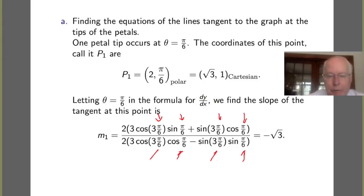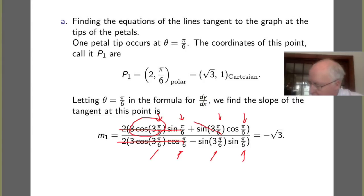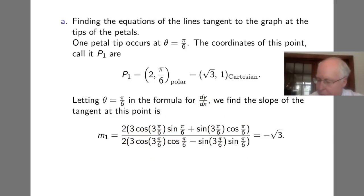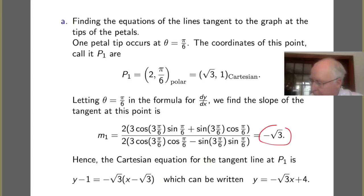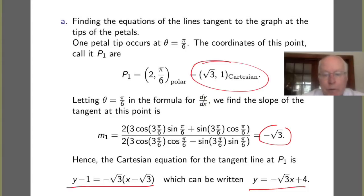Setting theta equals pi over 6 in our dy/dx formula, the slope m1 turns out to simplify nicely. Cosine of 3 times pi over 6 is cosine pi over 2, which is 0, so those terms vanish. Sine of pi over 2 is 1, so this really just turns out to be minus cotangent of pi over 6, which is minus root 3. So by point-slope form, the tangent line has equation y minus 1 equals minus root 3 times (x minus root 3), which simplifies to y equals minus root 3 x plus 4.